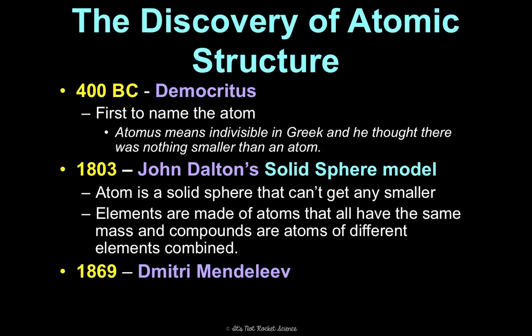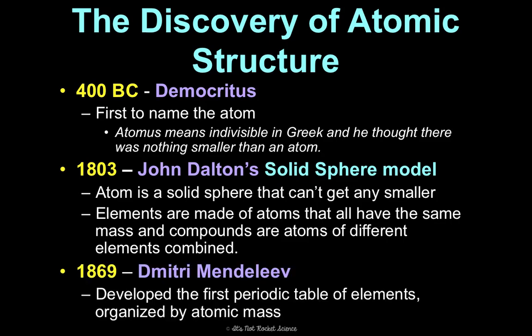In 1869, Dmitri Mendeleev was the first to assemble a periodic table of elements. It looked a good bit different from what we have today, because he organized it by atomic mass. I'll introduce you to someone in a minute that came up with more of the organization that we have today on the table.